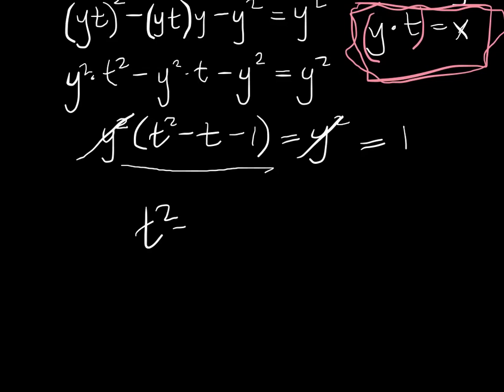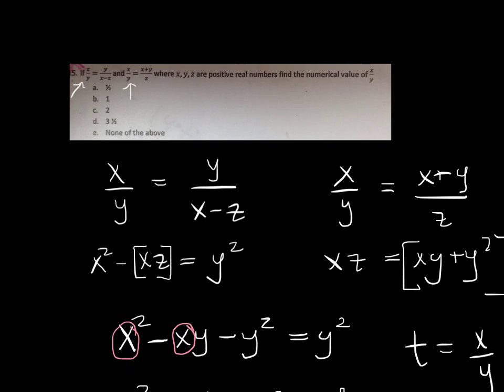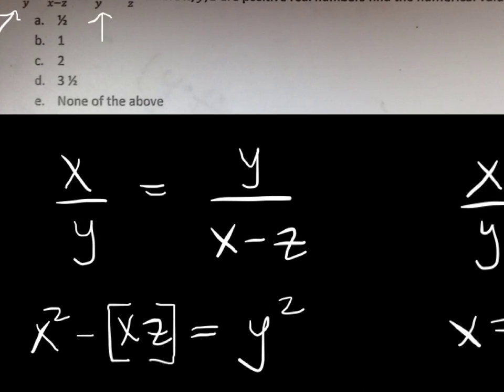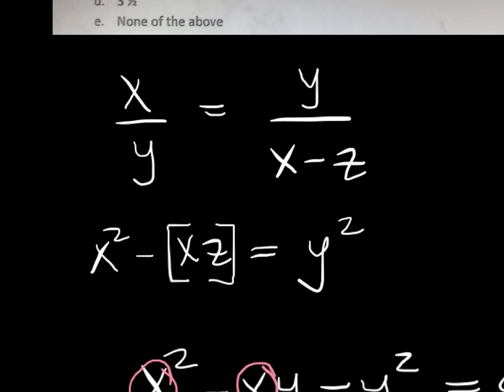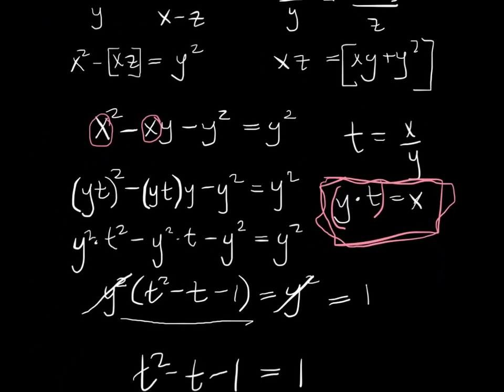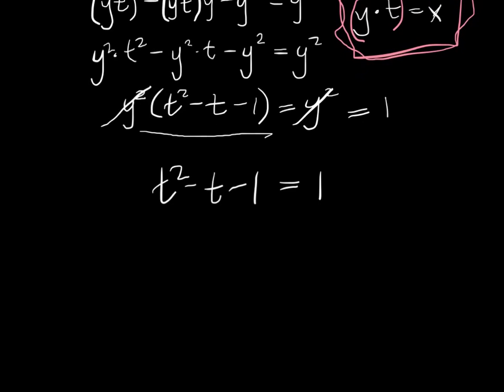t squared minus t minus 1 equals 1. At this point, because it's a multiple choice exam or multiple choice contest, I am going straight down the answer list. And I am plugging in all these things for t. Okay? Yay. But just because we have this opportunity to learn something, let's look at how we would solve this sort of the professional way. I would do t squared minus t minus 2 equals 0.